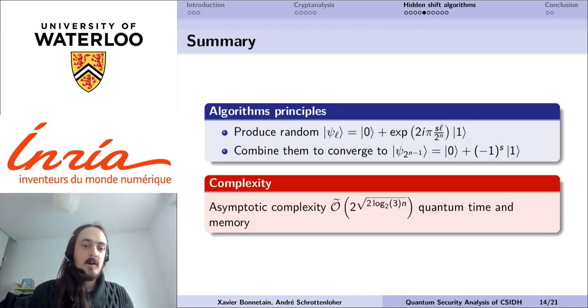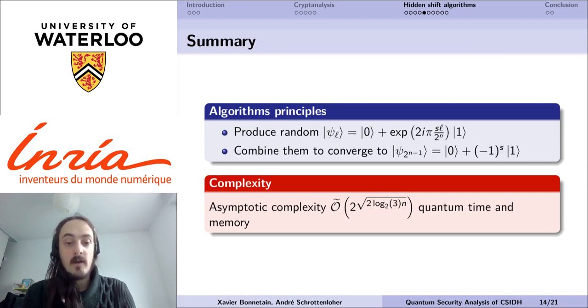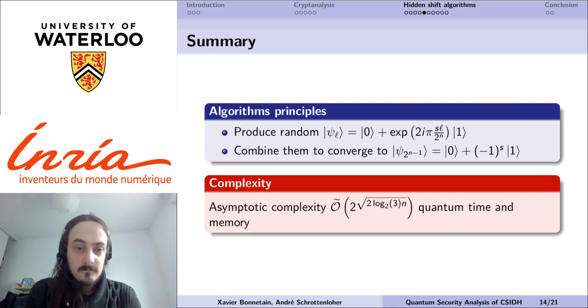The general algorithm principle is to begin with many random labeled qubits and to combine them to converge to the labels we want. This algorithm is sub-exponential, its asymptotic complexity is in 2 to the square root of 2 log 3 of n, up to some polynomial factors, both in quantum time and in quantum memory. We can't have a low quantum memory because we need to have this large list of labeled qubits in memory in order to combine them.